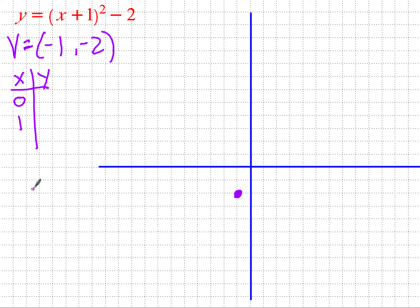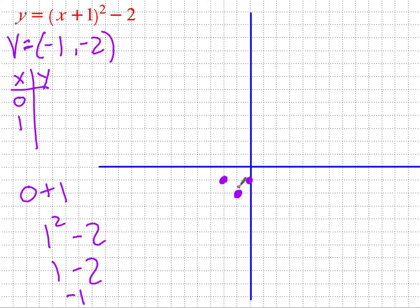Plugging in zero: (0 plus 1) squared minus two equals one minus two equals negative one. So at x equals zero, y equals negative one — that's one up from the vertex. By symmetry, x equals negative two also gives negative one. Plugging in one: (1 plus 1) squared minus two equals four minus two equals two. So we go up one, then up three — that's the pattern every time.